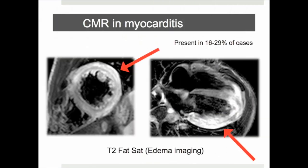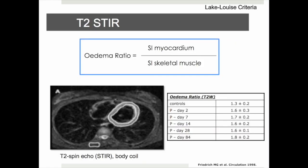Increased T2 signal on T2 weighted imaging is less common and usually representative of acute or ongoing active inflammation. Because of the more uniform spread of grey values in T2 weighted images, detecting an increase in T2 signal can be occasionally quite challenging. Hence the role for a supportive quantitative measure — the edema ratio — which relates the signal intensity of myocardium to that of skeletal muscle.